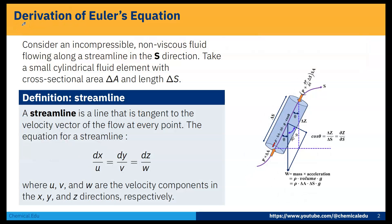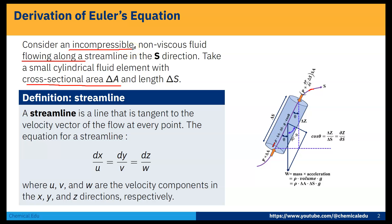Consider an incompressible, non-viscous fluid flowing along a streamline in the S direction. Take a small cylindrical fluid element with cross-sectional area δA and length δS. Remember: incompressible means density is constant, and non-viscous means viscosity is zero.